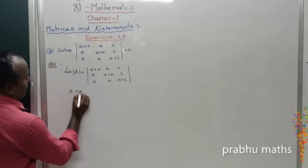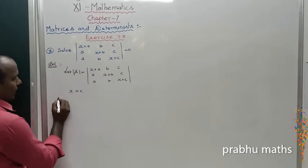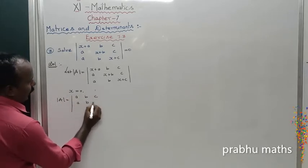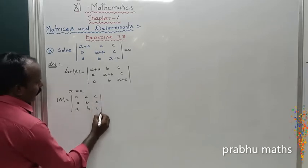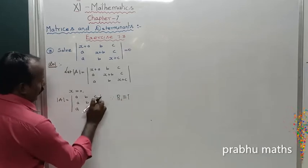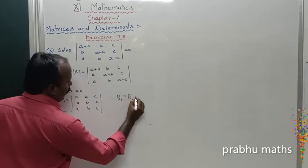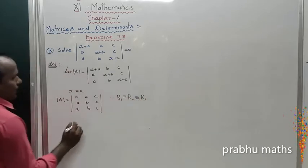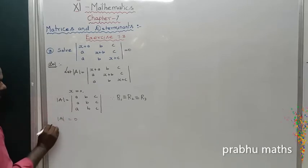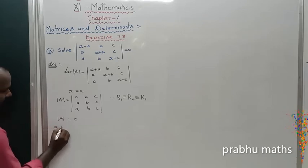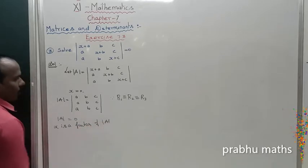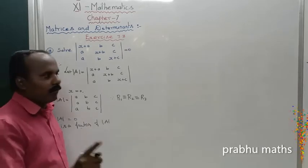Suppose x is equal to 0. Now replace x by 0. The determinant A becomes a matrix where all rows are a, b, c — so R1 is identically equal to R2 is identically equal to R3. Therefore the determinant is equal to 0. So x is a factor of the determinant A.